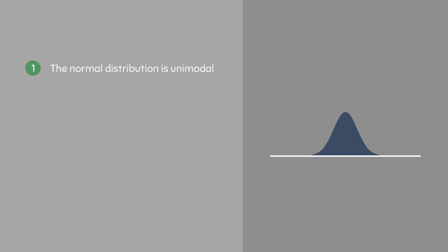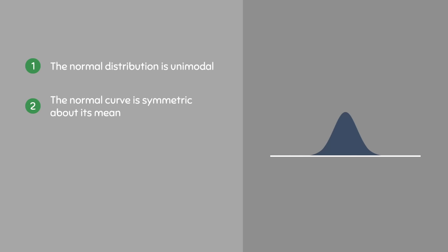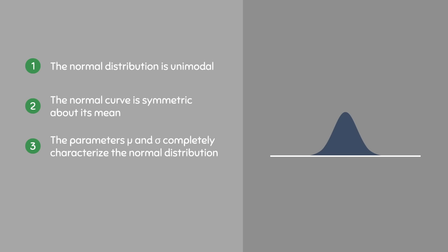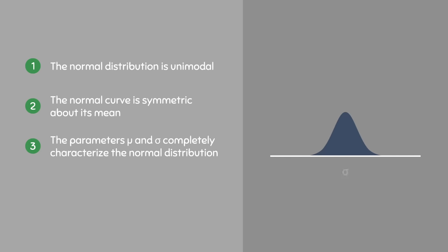Overall, here are some key points about the normal distribution. The normal distribution is unimodal, meaning it has a single peak. The normal curve is symmetric about its mean, so the distribution can be cut into two equal halves. The parameters mu and sigma completely characterize the normal distribution: mu determines the location of the distribution and where data tends to cluster, while sigma determines how spread out the distribution will be.